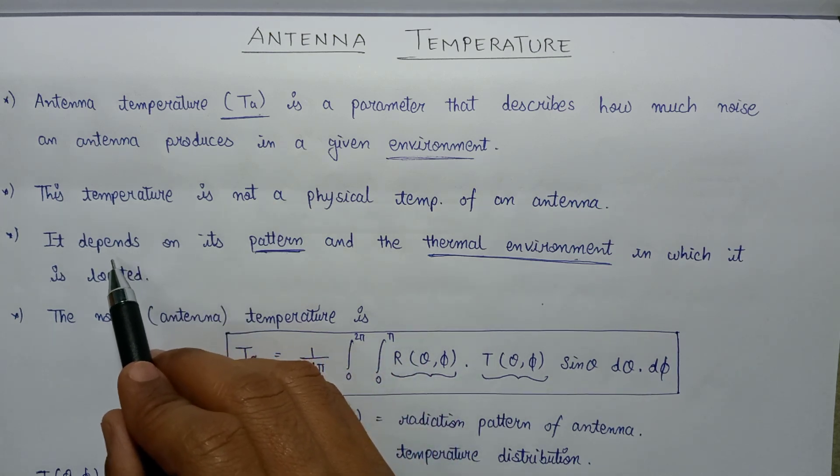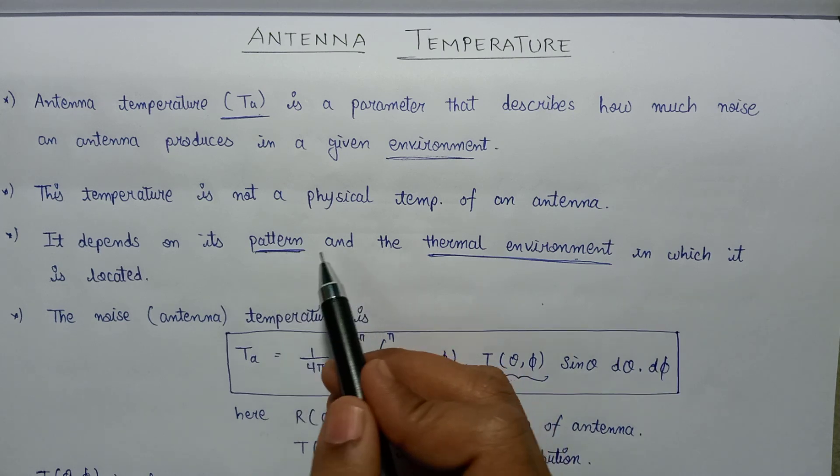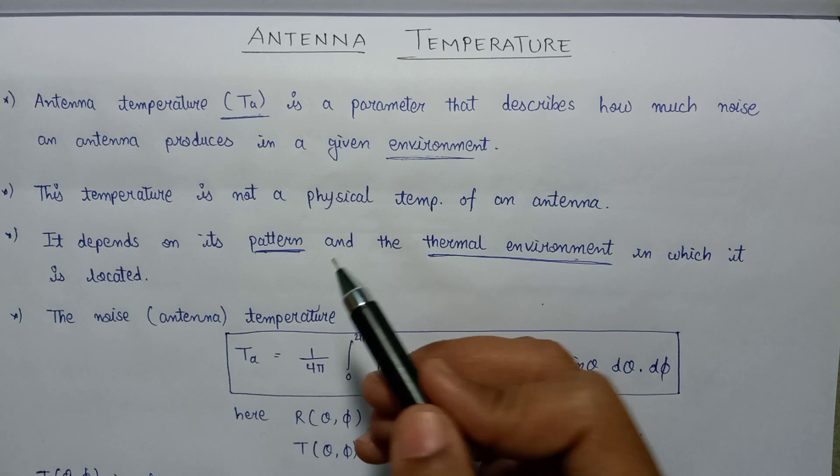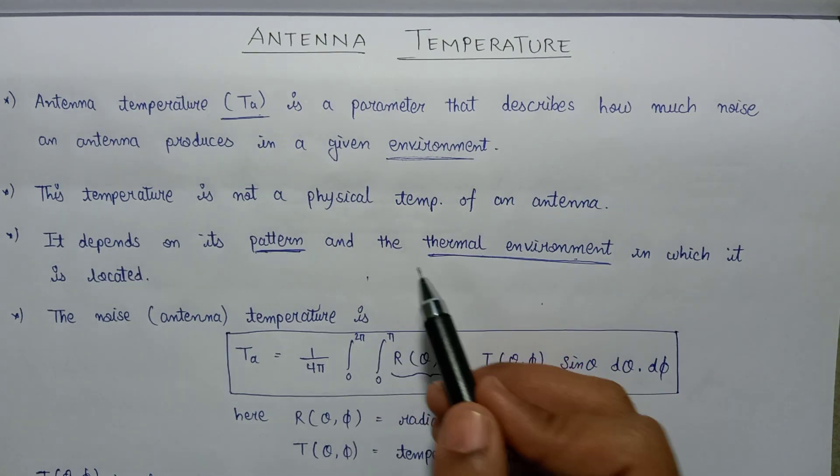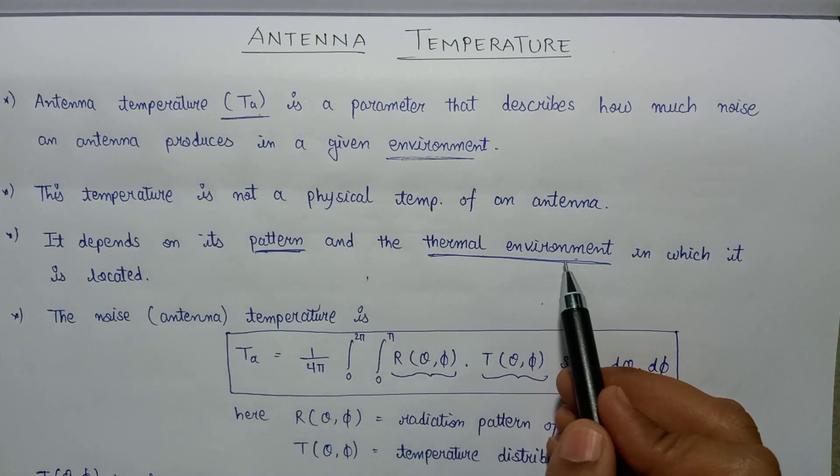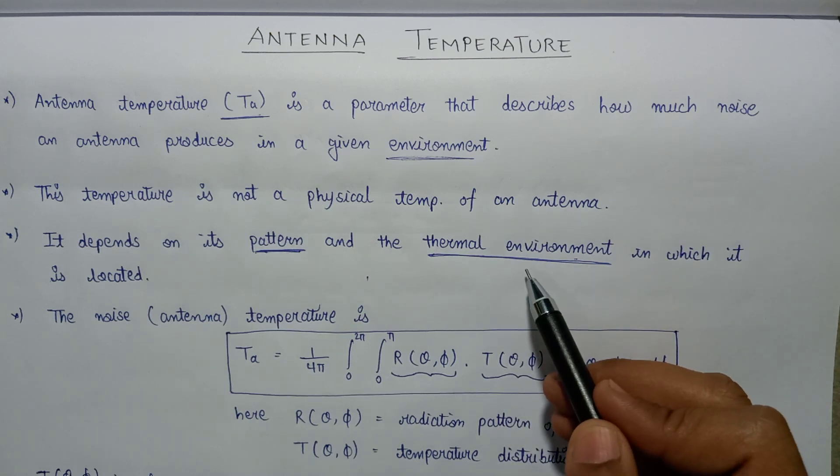Since it has a dependency on two factors, the radiation pattern of an antenna clearly specifies how much noise will be produced by an antenna that is located in some given environment. Also, the thermal environment specifies the amount of noise that is generated by an antenna.